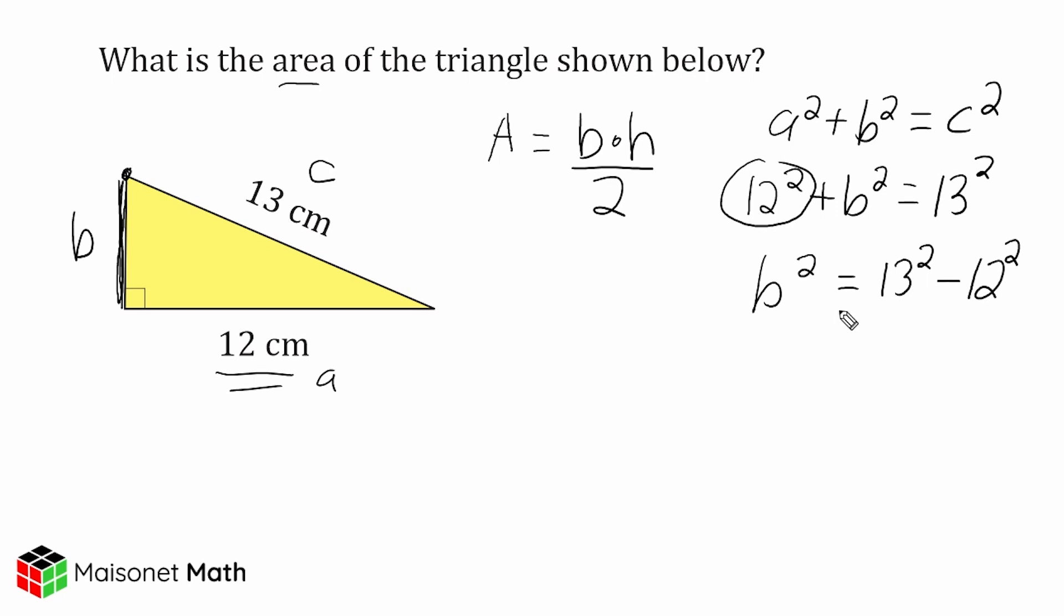So what we're going to do next is we are going to write B squared is equal to 13 squared, which is 169, and 12 squared is 144. And now we're going to write B squared is equal to the difference of these two values, which is 25. And then we take the square root of 25 to say that B is equal to 5.